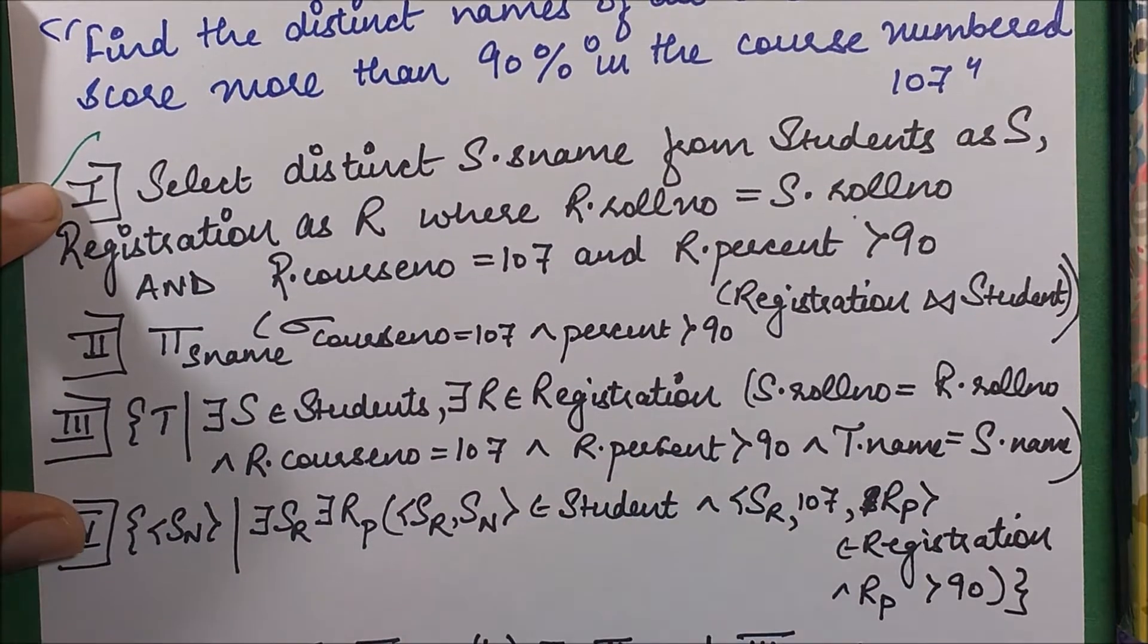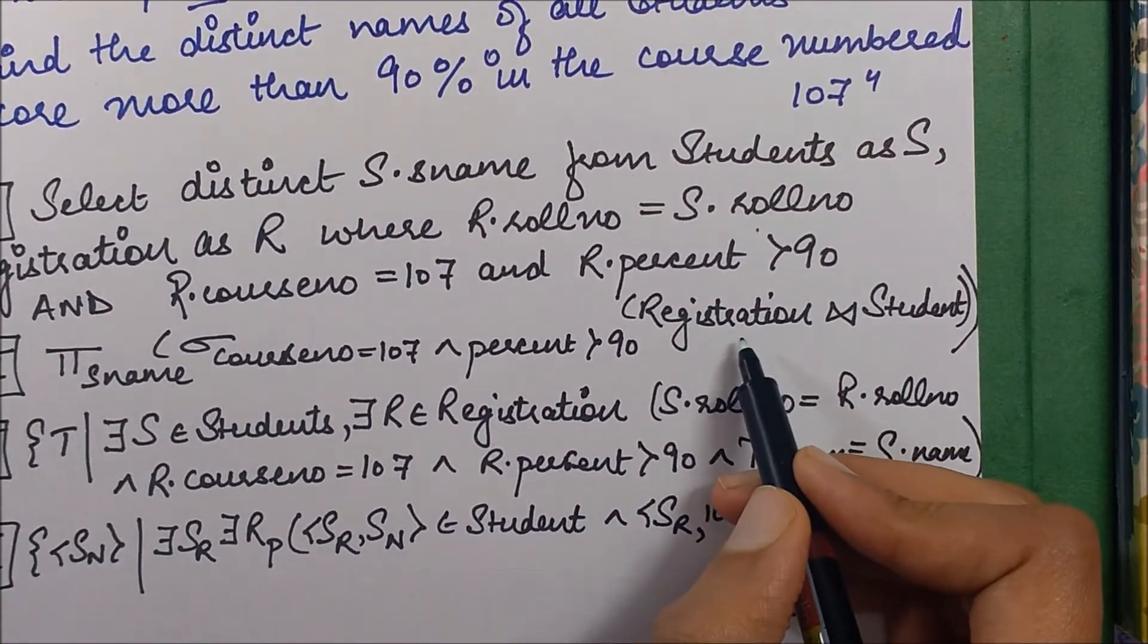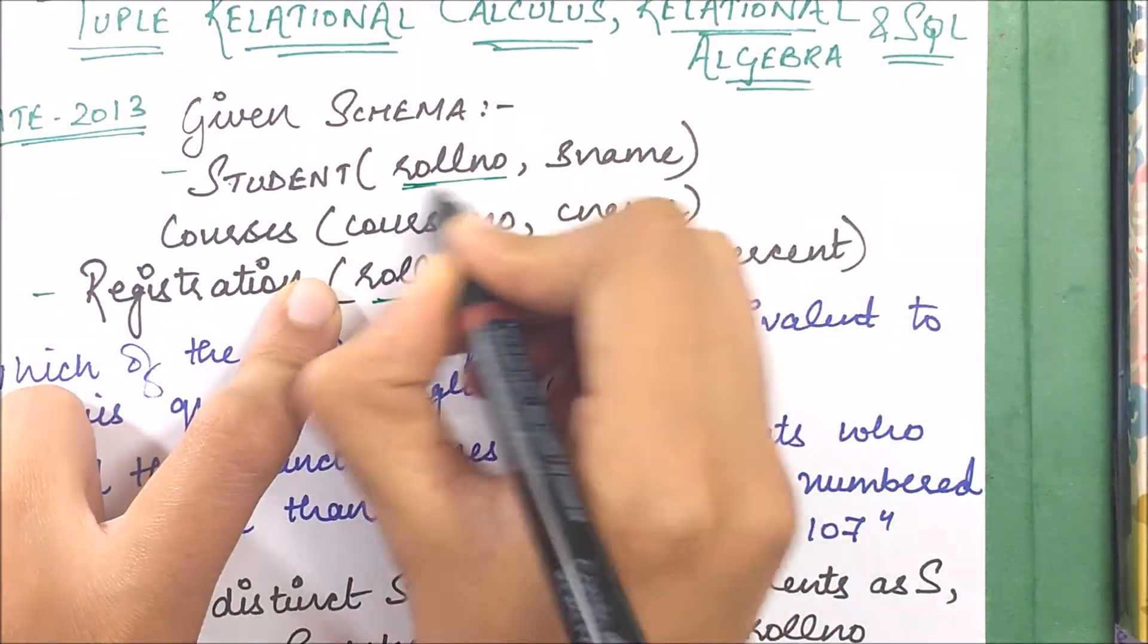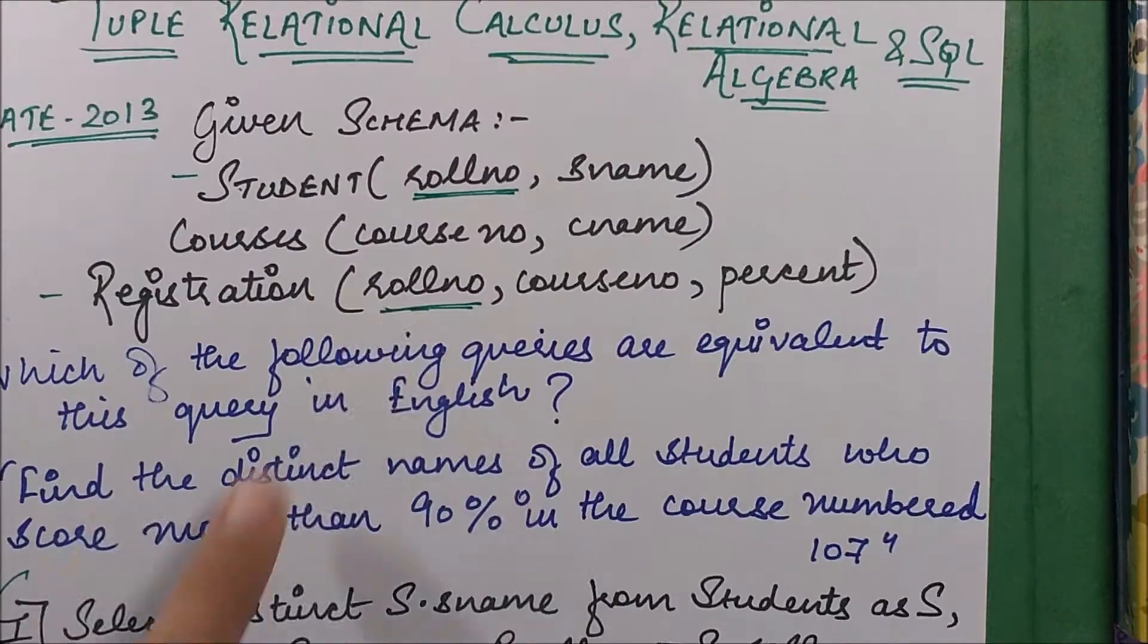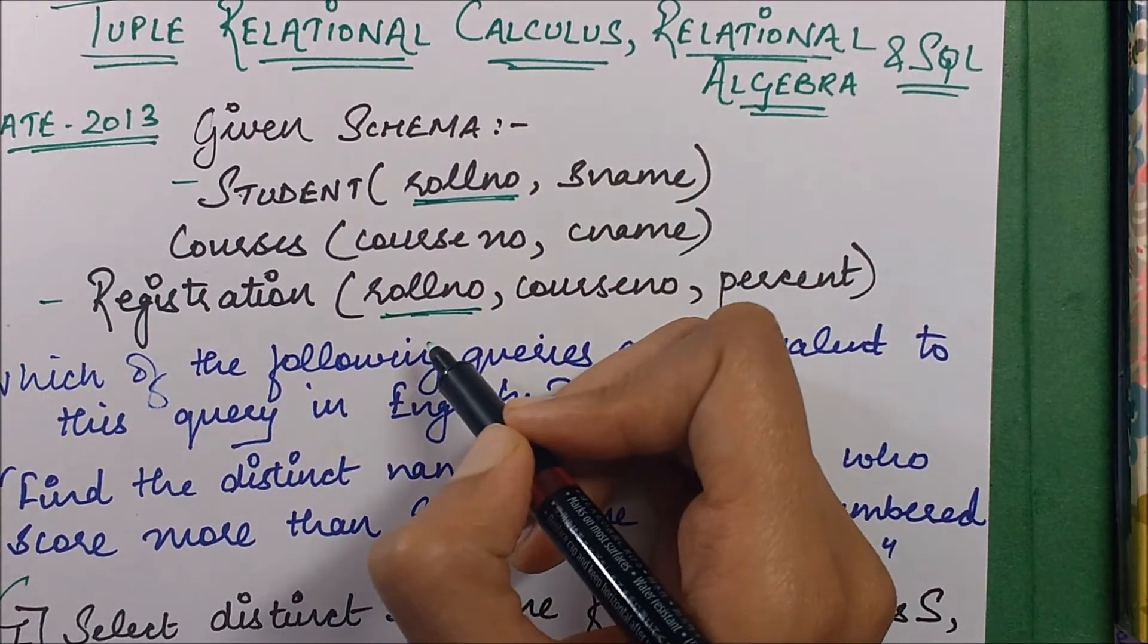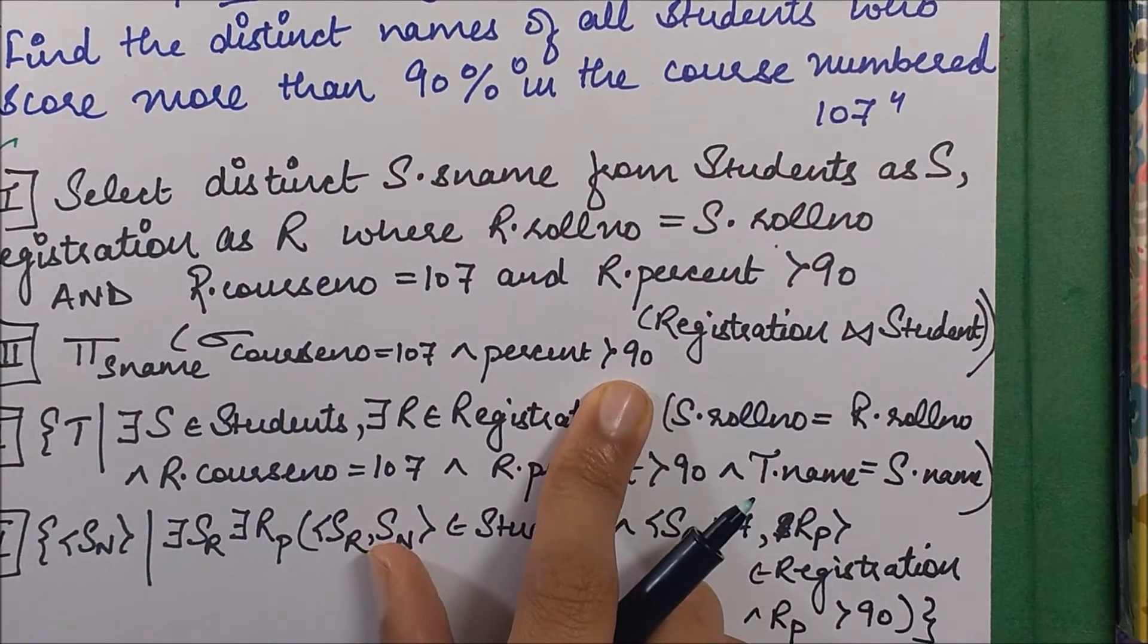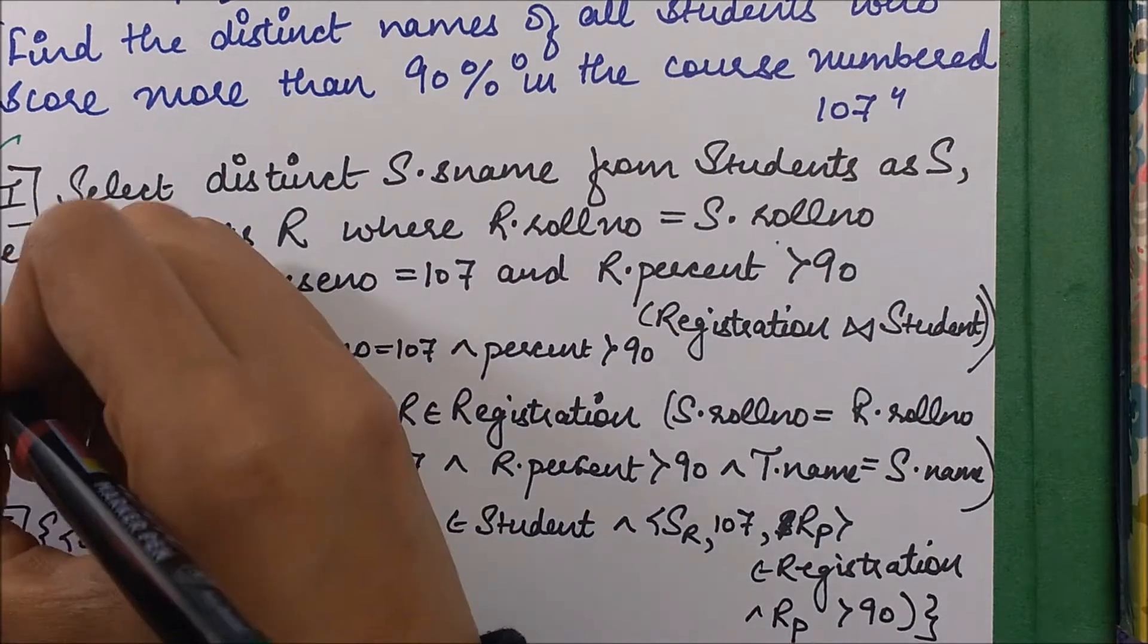The second part is from your relational algebra point of view. What you do is perform a join of Registration and Student - this is a natural join on the common attribute, which is roll number. In natural join, the condition Student.rollno = Registration.rollno comes automatically. The condition specified is course number is 107, percent is more than 90, then you apply a projection operator to choose the student names. Again, this is also correct as per me.